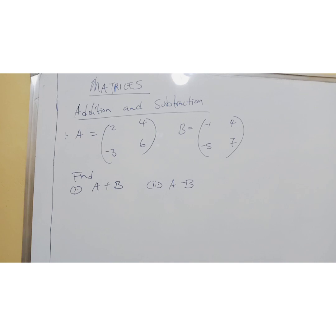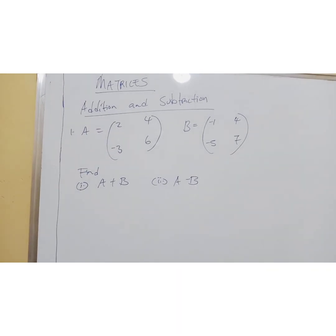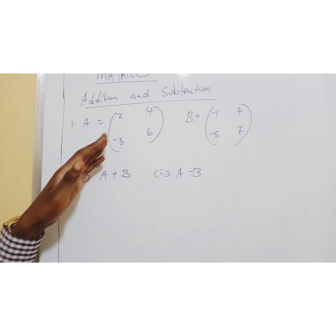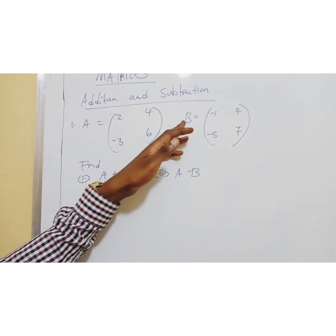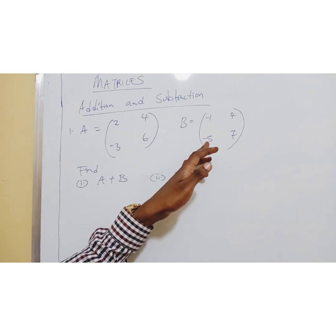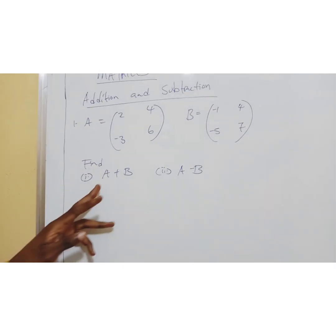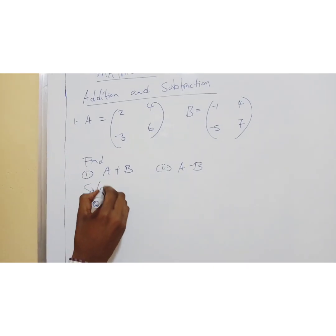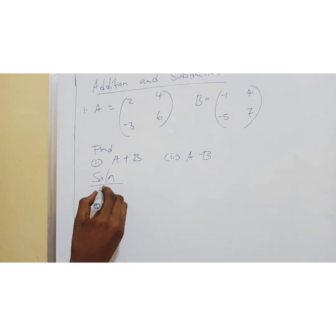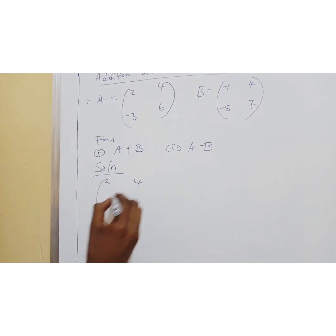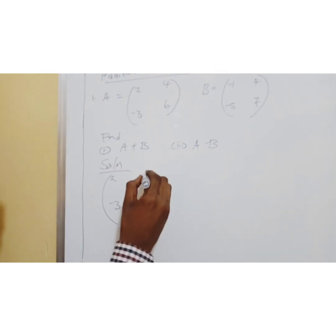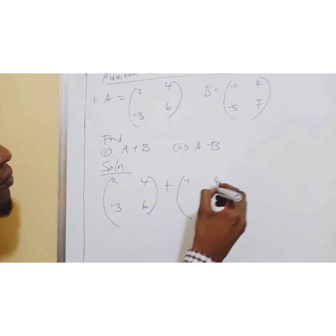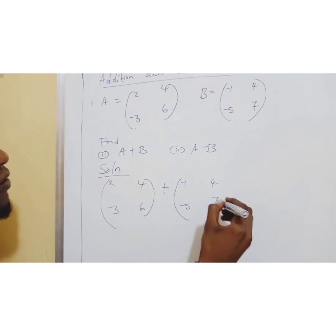Matrices is plural, singular is matrix. So, just two examples: addition and subtraction. We have A equals 2, 4, negative 3, 6, and B equals negative 1, negative 5, 4, 7. Find A plus B. So A plus B: you write matrix A as 2, 4, negative 3, 6, plus matrix B: negative 1, 4, negative 5, 7.